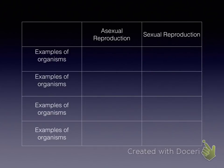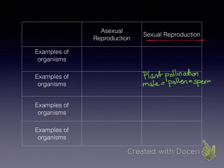Our next term is plant pollination, also in the sexual reproduction column. It's very similar to fertilization in humans. Plants have female and male parts. In a plant, the pollen is actually sperm, and it fertilizes the ovule — the egg — of the female plant.